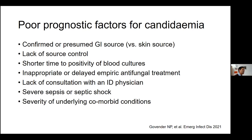Poor prognostic factors for candidemia include a confirmed or presumed GI source versus a skin source, lack of source control — if you don't sort out the source, antifungal treatment won't make much difference — shorter time to positivity of blood cultures as a proxy for the quantity of Candida in the blood, inappropriate or delayed antifungal treatment, and lack of consultation with an ID physician.